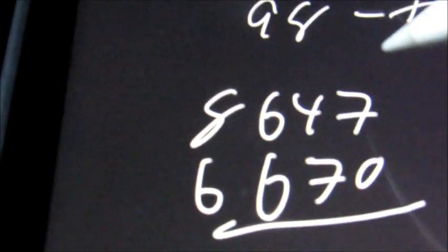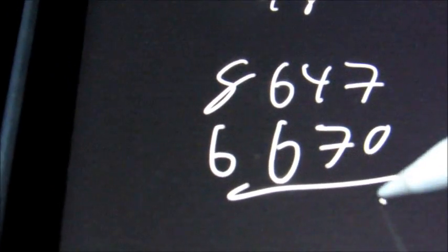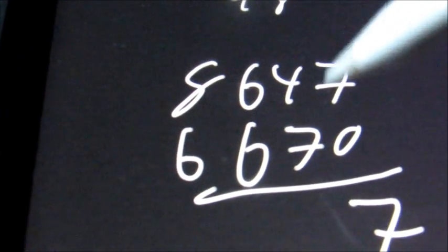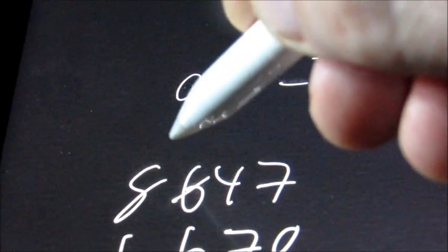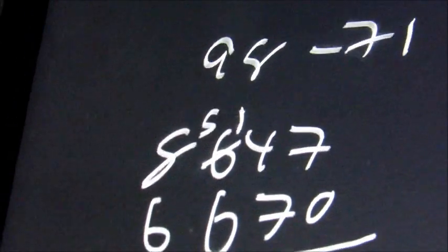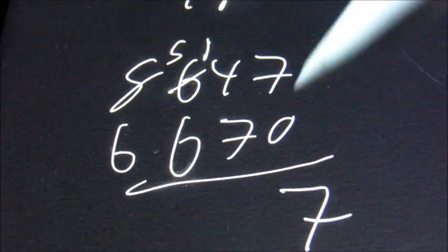Let's say that we have 8,647 minus 6,670. 7 minus 0 is 7. And here we have 4 minus 7, so we need to borrow a 1 from here. So this would become a 5. This would become 14. 14 minus 7 is 7.